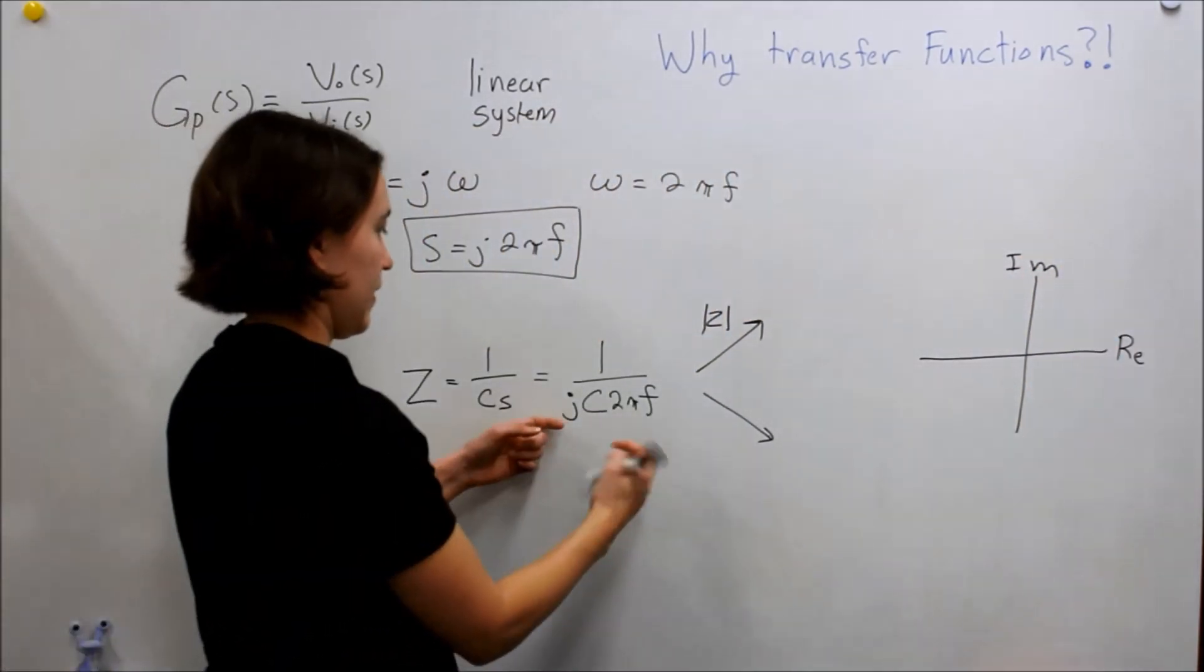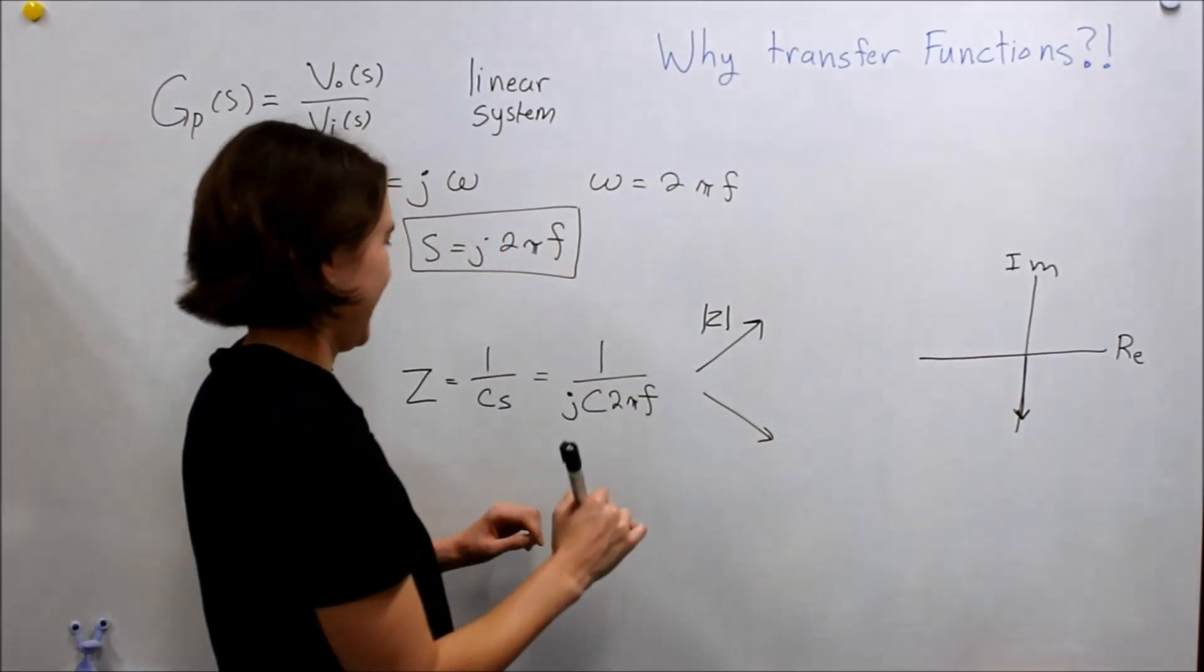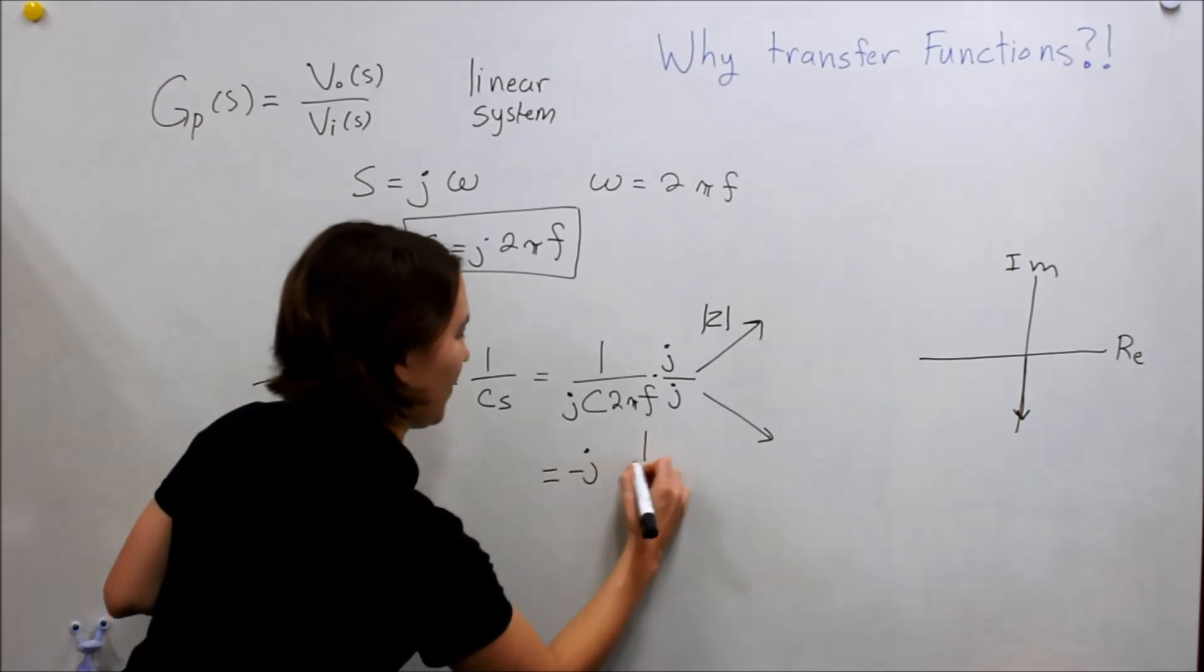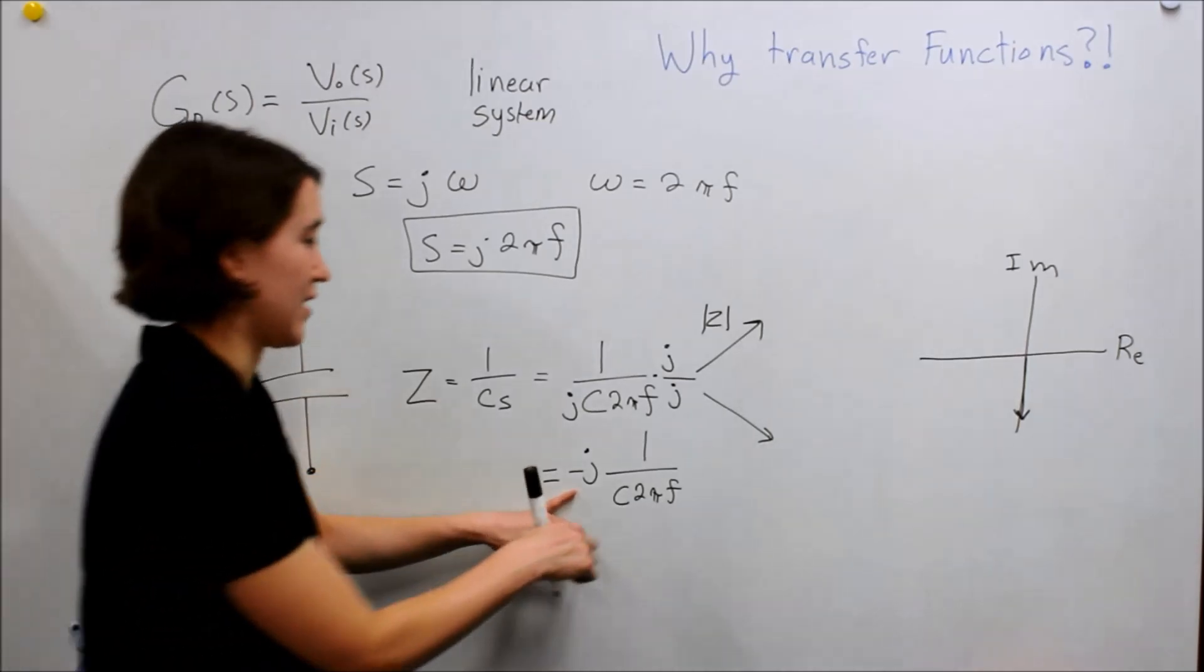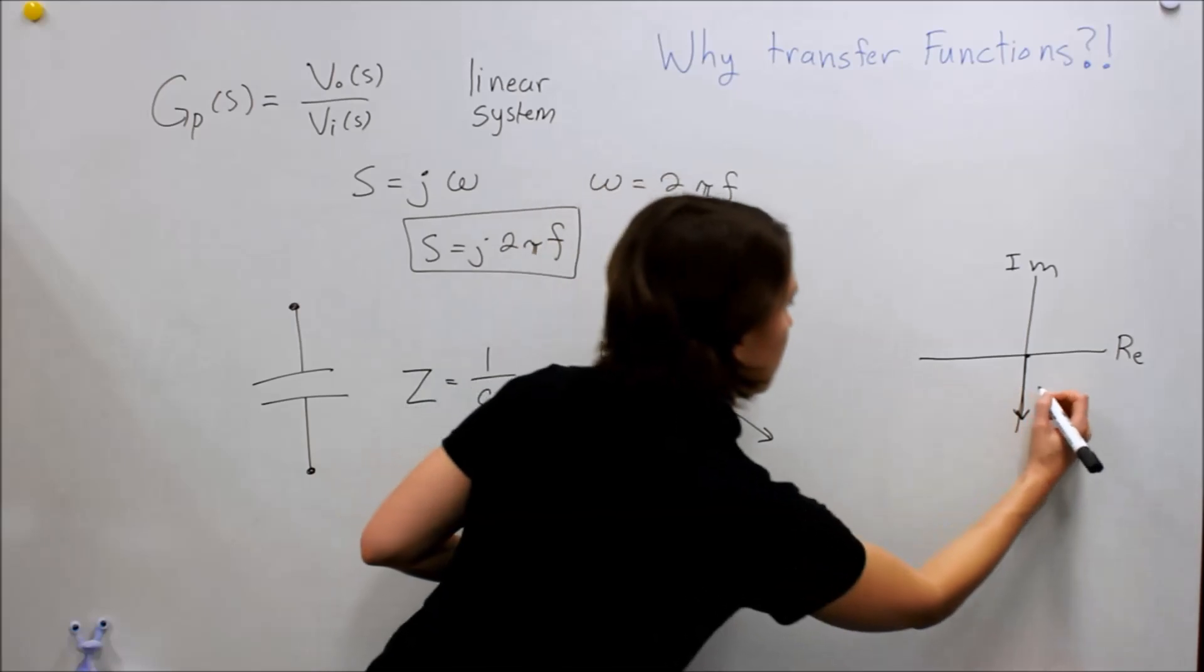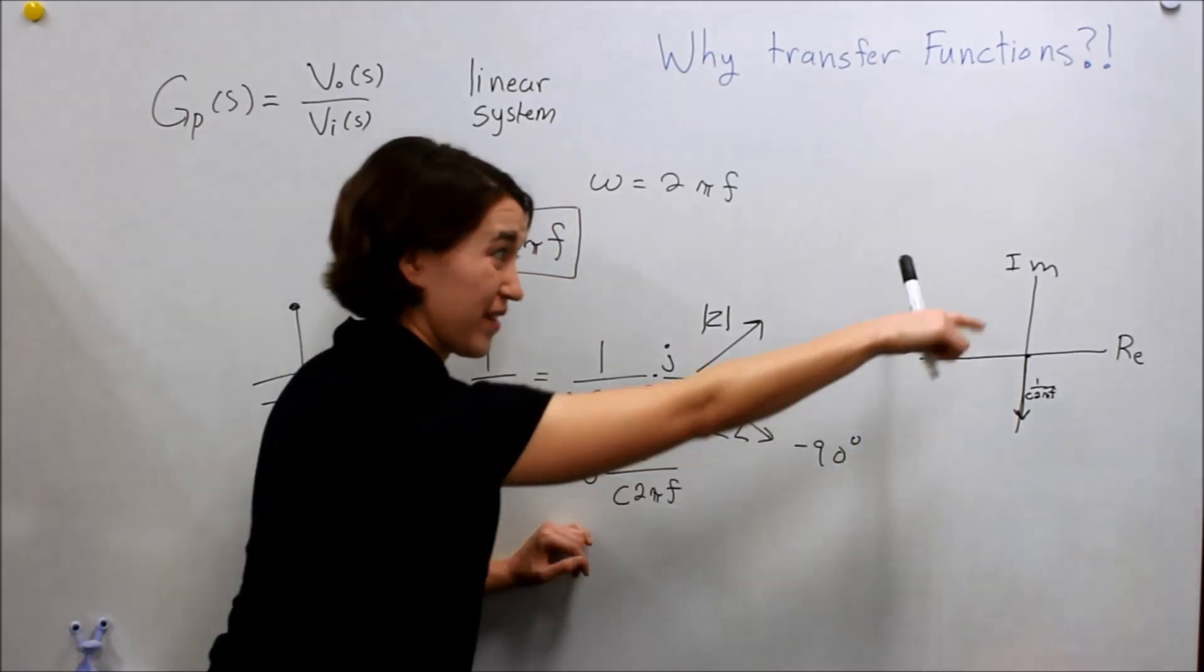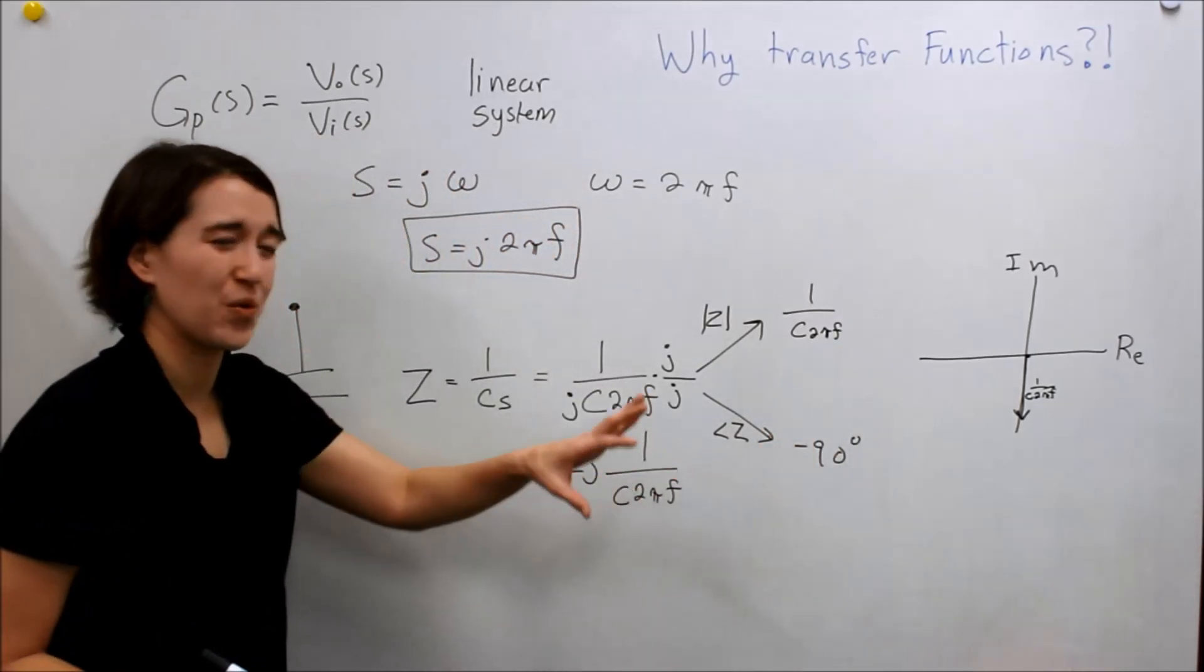Another way to represent this is to look at the real and imaginary axis. So really, what we're doing here, this j means that it's pointing directly in this direction. The negative imaginary direction. We actually have to multiply it by j by j. And then we'll see that this fraction actually goes to negative j times 1 over C2πf. So from here, it's a little bit clearer that the j is actually in the negative direction. So if we look at this, it's pointing down. So that's a magnitude j. And its magnitude here is 1 over C2πf.